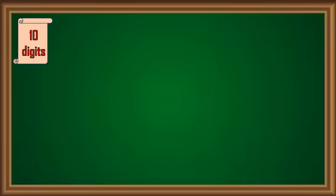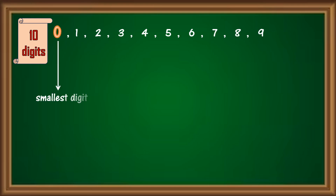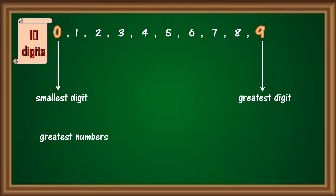By now, we know the 10 digits of the number system very well — they are 0 to 9. 0 is the smallest digit and 9 is the greatest digit. So, in order to form the greatest numbers, which digit will you use? Obviously, greatest numbers will be formed with the greatest digit 9.